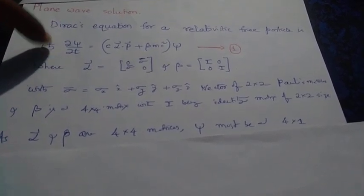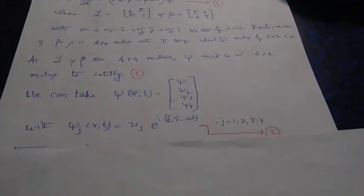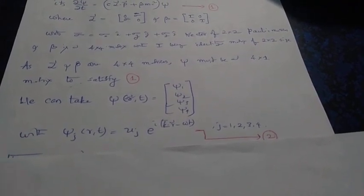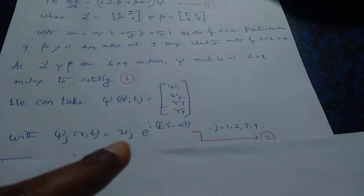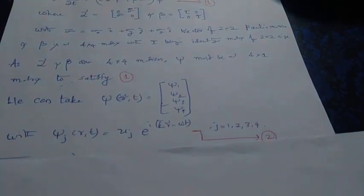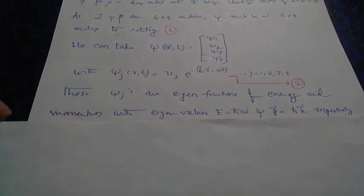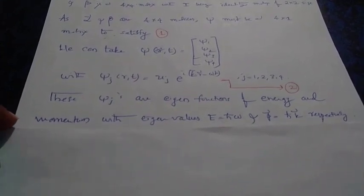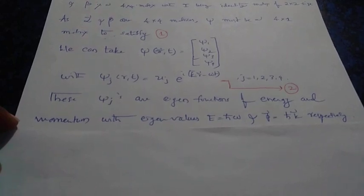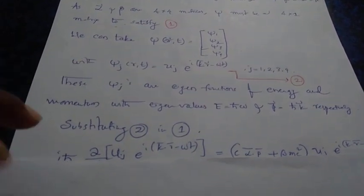So the wave function psi must actually be a four by one dimensional column matrix, so that its dimensions are consistent on both sides of the equation. We take the wave function psi(r,t) as a column matrix with dimension four, where each component has the form of a plane wave with amplitude u_j and a phase factor. Here j runs from one to four, and these psi_j are eigenfunctions of the particle with energy ℏω and momentum ℏk respectively.